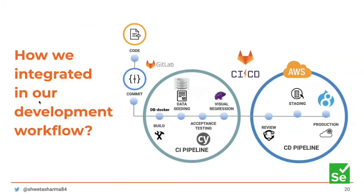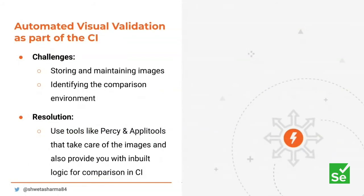This is how the CI/CD pipeline looks at Accelerant. Once code is committed, we have a DB Docker running — the advantage being we don't have to worry about creating test automation data every time; data is seeded quickly into the database. Then our acceptance and visual regression tests run in no time because the scripts primarily focus on having more valuable tests and assertions in place rather than worrying about test automation data. After tests run, it deploys to several servers.